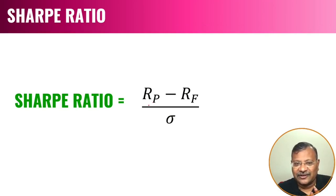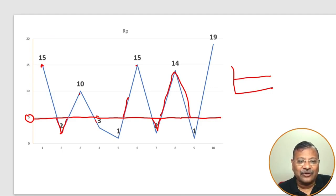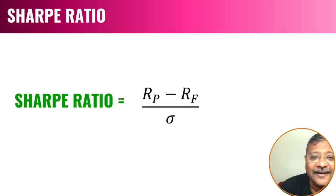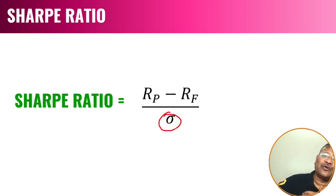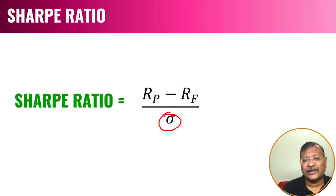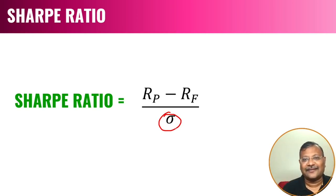Sharpe Ratio essentially measures return of portfolio minus risk-free return — the excess return above the minimum acceptable return — and divides it by standard deviation. Now, this standard deviation is the deviation of the whole portfolio and includes both the upside move and the downside move. But Sortino Ratio is not concerned with the upside move — it is only concerned with the downside deviation. The question that might be in your mind is: how do you calculate only the downside deviation? I will show you that.